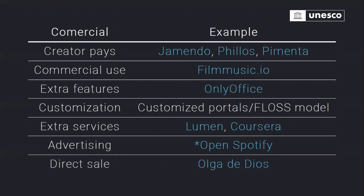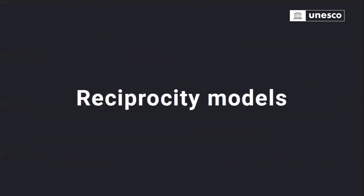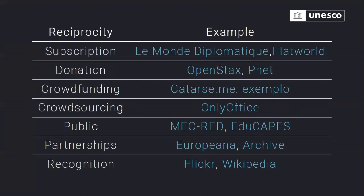Moving to what I'm calling reciprocity models — a generic word for other ways to sustain repositories not necessarily based on advertising or commercial use. One is subscription: paying a monthly fee. For example, Flat World Knowledge moved in that direction. Le Monde and Le Monde Diplomatique are newspapers licensed openly but supported through subscription, where a sustainable base of paying users allows the content to be available to everyone.